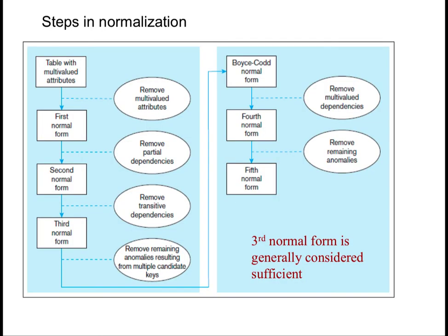Normalization can be accomplished and understood in stages, each of which corresponds to something called a normal form. Starting with a table, you have first normal form, second, third, then something called BCNF or Boyce-Codd Normal Form, then fourth normal form and finally fifth normal form. In this class we stop at third normal form because that's generally considered sufficient. In pure database theory, we go all the way up to the fifth normal form. A normal form is basically a state of a relation that requires that certain rules regarding the relationship between attributes are satisfied.